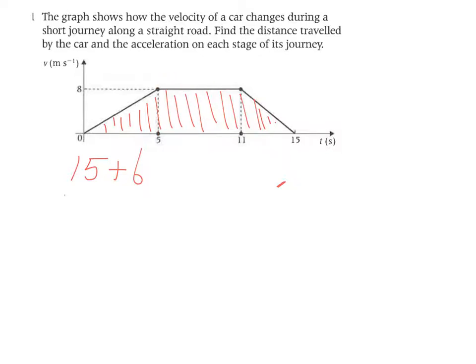So the sum of the two parallel sides divided by 2, and times that by the height, 8. If you do that properly, you're going to get 84 meters as the distance travelled.